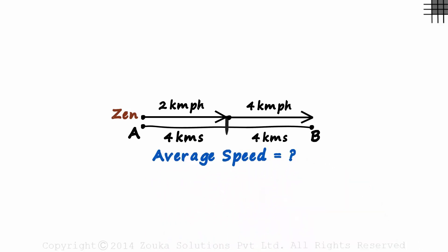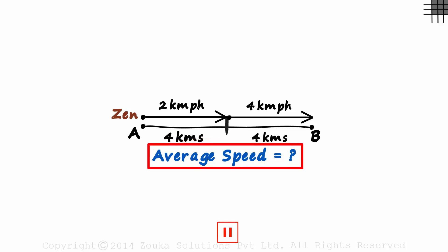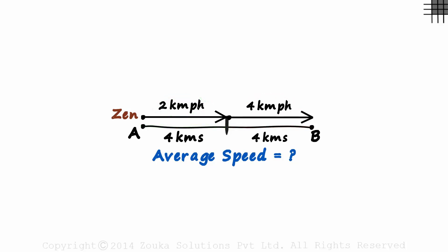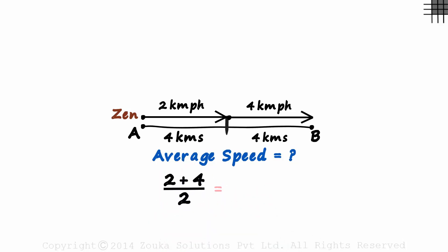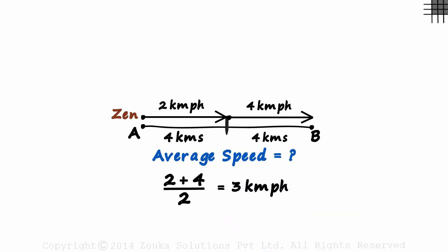We haven't seen the concept of average speed earlier. Pause the video and try to find this average speed. It's easy! Since he travels half the distance at 2 kilometers per hour and the remaining half at 4 kilometers per hour, his average speed will be 2 plus 4 over 2 — the average of the two numbers — which equals 6 over 2, or 3 kilometers per hour. That's Zen's average speed over this distance.